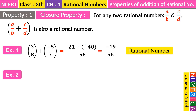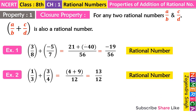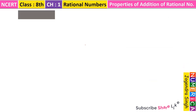Our second example is 1/3 + 3/4. After taking LCM we get (4 + 9)/12 = 13/12, which is also a rational number. So I think you understand very well what is the Closure Property of rational numbers. Let's move on to the next property.